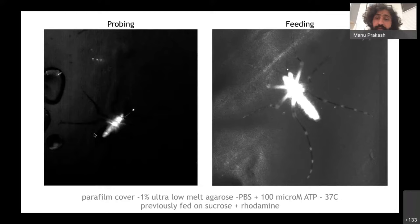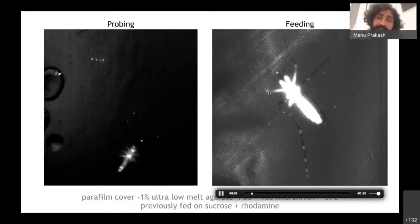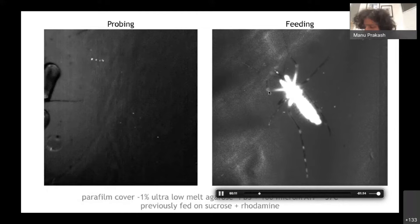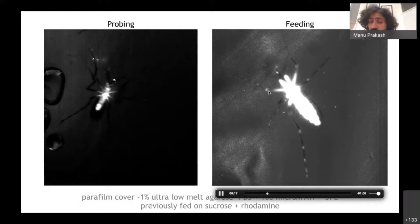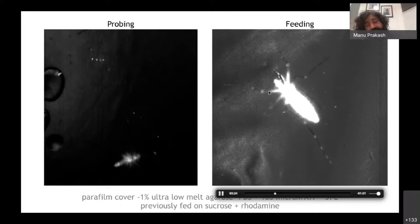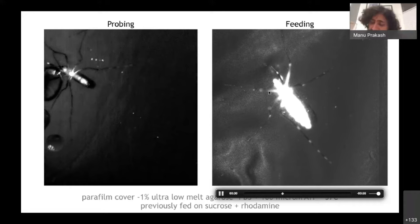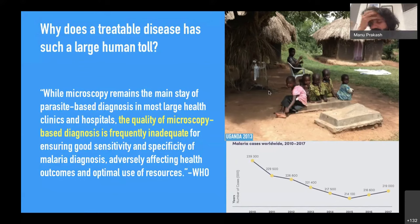We can actually understand the biophysics of biting behavior in mosquitoes. This is unpublished work, but we are working on understanding feeding behavior — really what happens when mosquitoes probe and search. There's a recent paper from Leslie Vosshall's lab where they've shown neuronal sensing associated with the stylet of the mosquito that senses chemical cues associated with biting. So Bitoscope has become a very versatile tool to do mosquito biology in a very quantitative manner.